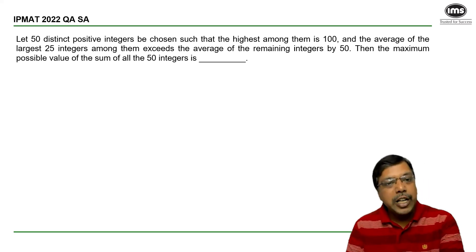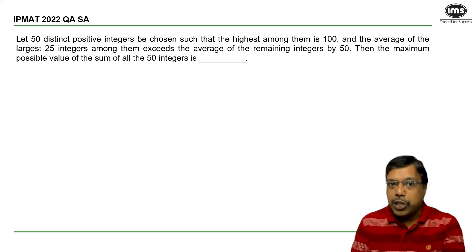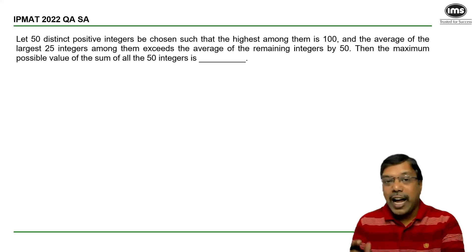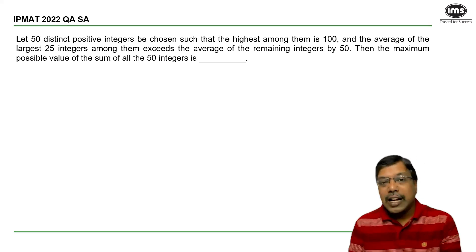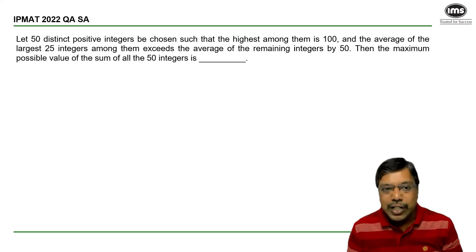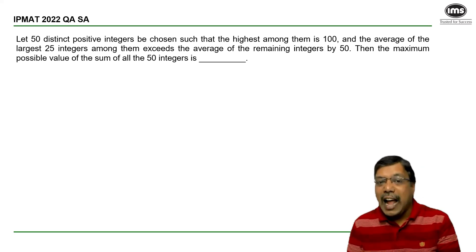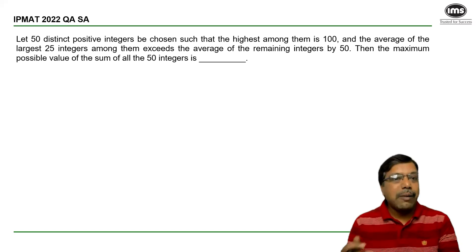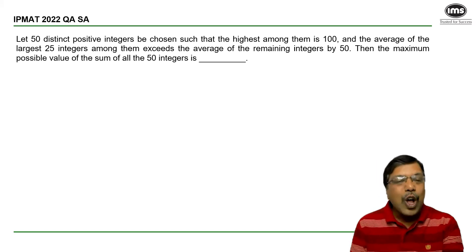There are 50 distinct positive integers to be chosen such that the highest is 100. The average of the largest 25 integers exceeds the average of the remaining integers by 50. Then the maximum possible value of the sum of all the 50 integers is?